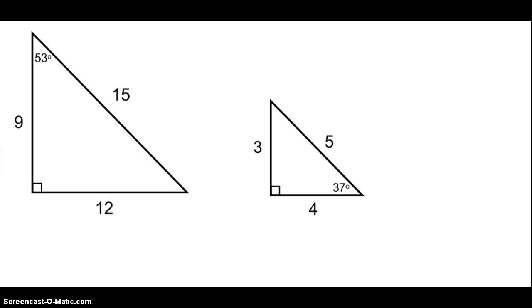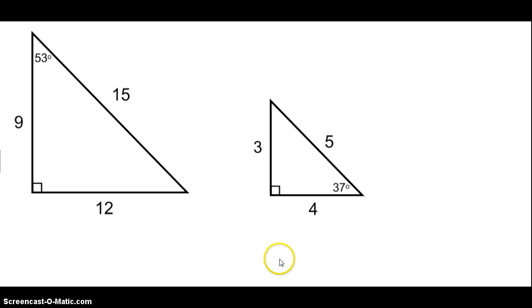So let's say that we have these two right triangles. Can we say that these two right triangles are similar? Remember that similarity means that the sides are proportional and their corresponding angles are congruent.